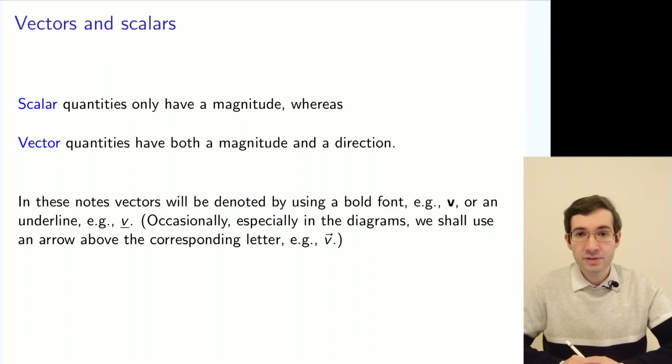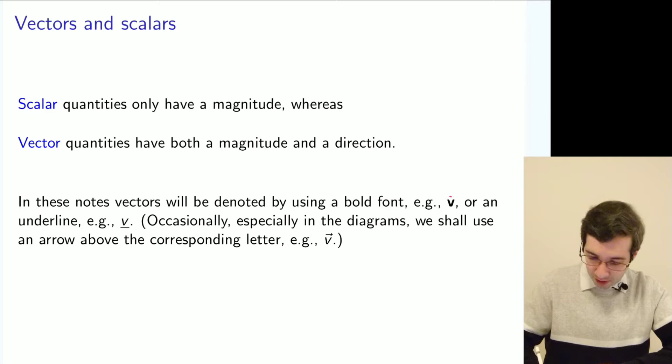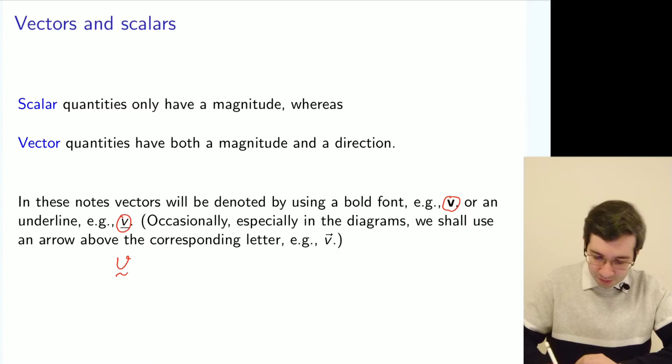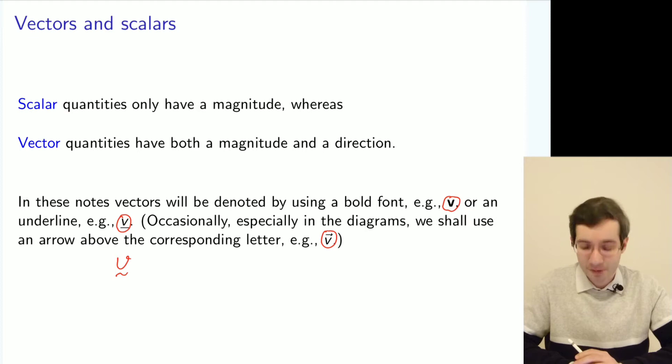About the notation, a common notation is to use a bold font for the vector quantities. Alternatively, you can do underline or else you can write it like that if you handwrite. Or you can use the arrow above the letter, but this is less common in modern notation.